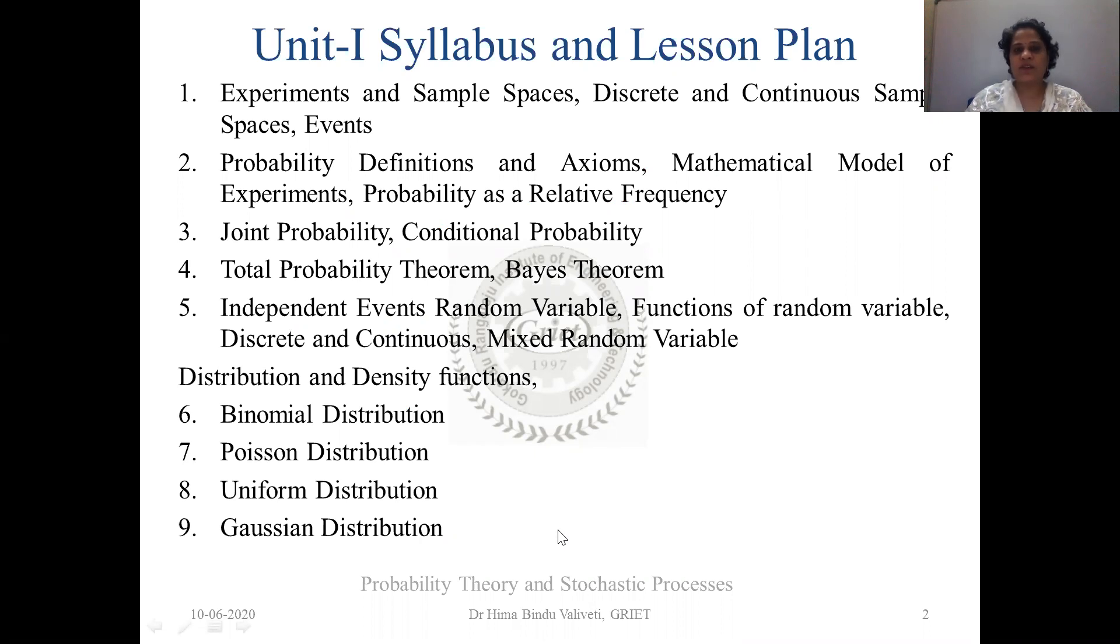It starts off with what a sample space is, what is an experiment and what are the types of events, then runs on to Probability Definition and the Axioms, so on and so forth. You are going to come across Mathematical Concepts that you have learnt in your grade 10 or so. So we were talking about Joint Probability, Conditional Probability, then Bayes Theorem, so on and so forth. And then slowly you will be entering into the Distribution and Density Functions which we will be knowing down the line.